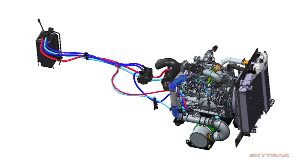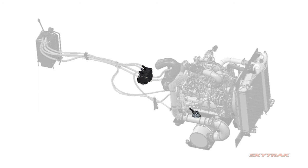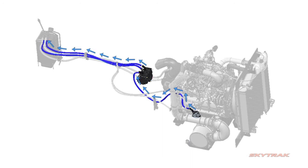Immediately after engine shutdown, the DEF injector opens and the pump activates to pull air into the lines and purge DEF back to the tank through both the tank supply and return lines. This ensures that a large amount of DEF does not become frozen within the lines.